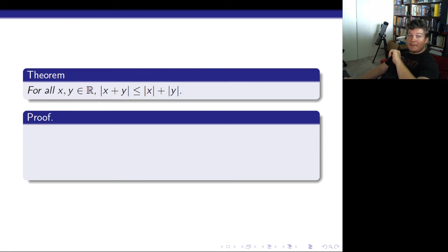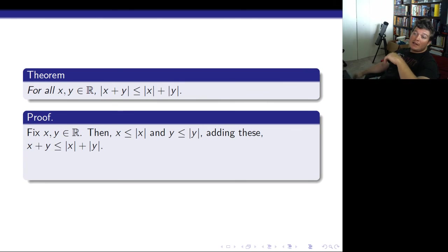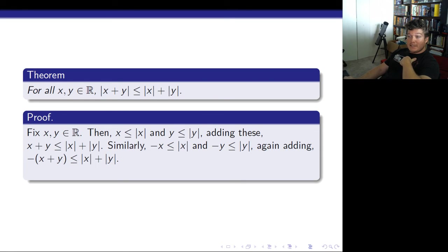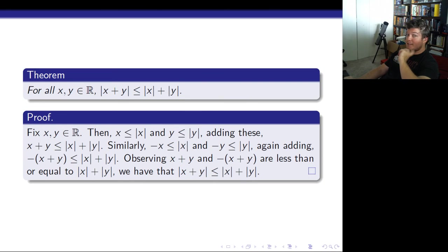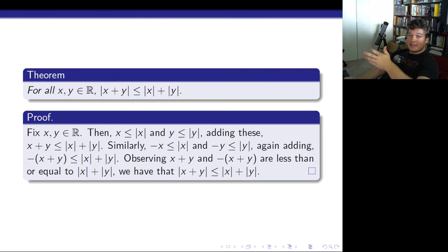So here we go. For all x and y in R, the absolute value of x plus y is less than or equal to absolute value of x plus absolute value of y. Proof: Fix x and y in R. Then x is less than its absolute value, and y is less than its absolute value. Adding these gives us x plus y is less than or equal to absolute value of x plus absolute value of y. Similarly, negative x is less than or equal to absolute value of x, and negative y is less than or equal to absolute value of y. Adding again gives us that negative of x plus y is less than or equal to absolute value of x plus absolute value of y. Observing that x plus y and negative of x plus y are both less than or equal to the right-hand side, we have that the absolute value of x plus y is less than or equal to absolute value of x plus absolute value of y.